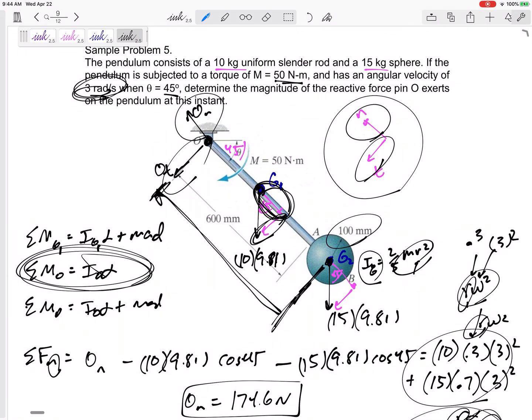Alright, so let's just talk overall about problem number five on the test. Problem number five is going to be a free body diagram, sum of the forces problem of a rigid body. Sum of the forces and sum of the moments.